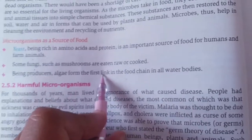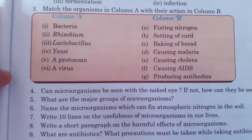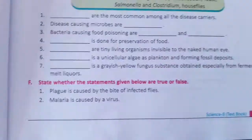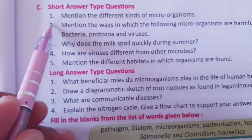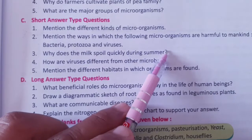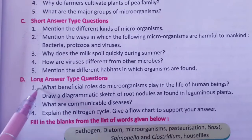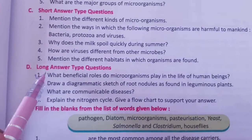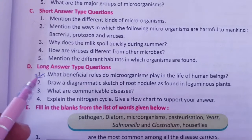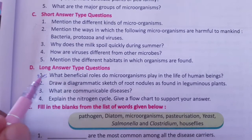We have discussed useful microorganisms. Now for the exercise questions: the first question asks you to mention the different kinds of microorganisms. The second question asks you to mention the ways in which certain microorganisms are harmful to mankind. Next class we will discuss the beneficial role of microorganisms in the life of human beings. Write down the answers and send them. Thank you.